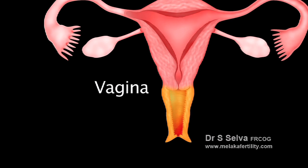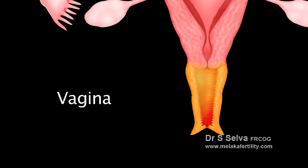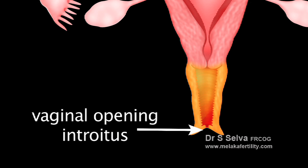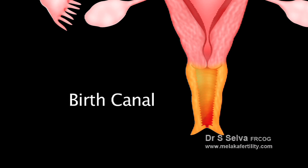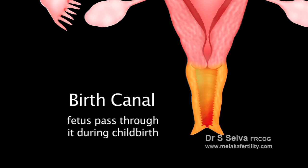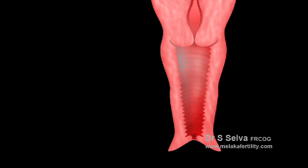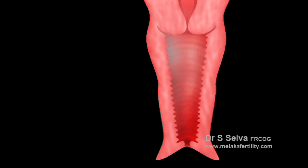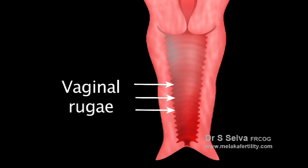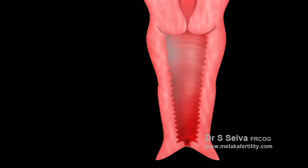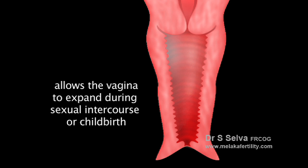The vagina is a muscular narrow canal that extends from the vaginal opening called the introitus to the cervix. It is also known as the birth canal, as the fetus passes through it to be born during natural childbirth. The inner wall of the vagina is surfaced with numerous folds of soft elastic mucous membrane called vaginal rugae, which allows the vagina to expand considerably during sexual intercourse or childbirth.